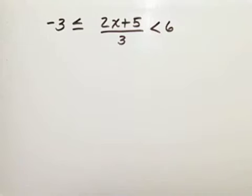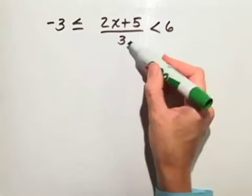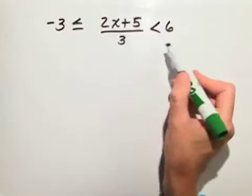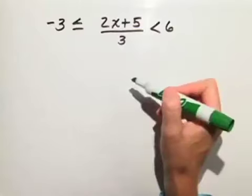Let's solve the compound inequality. Since we have a fraction with the denominator of 3, we can multiply all 3 parts by 3 in order to clear the fraction.